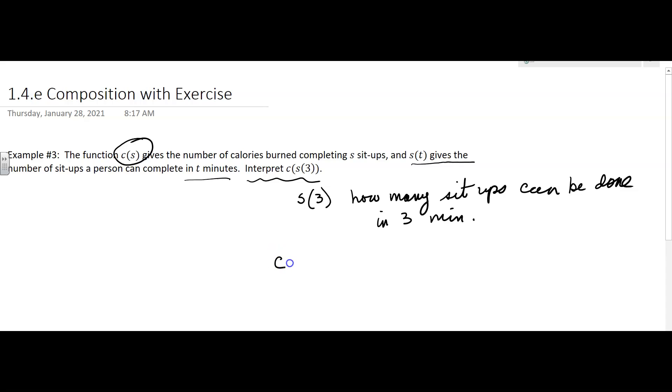So what does c of s of three mean? This gives you the number of sit-ups, right, number of sit-ups. And then c tells you if you tell me the number of sit-ups, I'll tell you how many calories you burn. So this is saying then how many calories burned in three minutes.